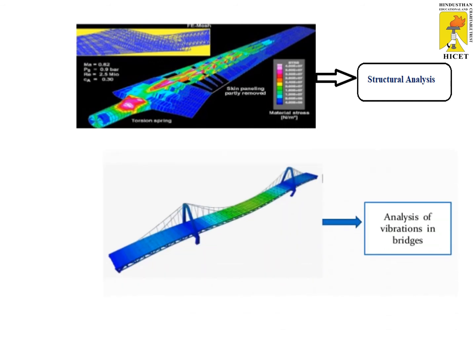Second, analyzing vibration in bridges. When a vehicle crosses a bridge, it may cause vibration. We have to analyze whether the design of the bridge is capable of absorbing the vibration created when vehicles pass through it — whether the bridge can hold that vibration or whether the vibration causes structural changes. So we have to analyze that.